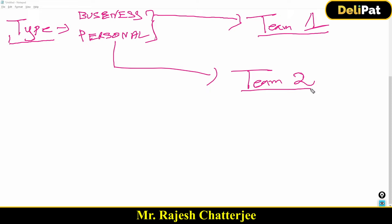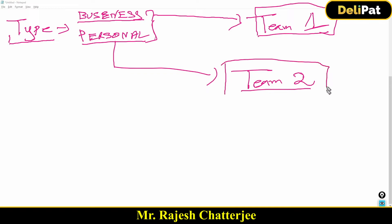There are two teams — Team One and Team Two. Team Two handles personal-level background verifications. If the lead type is Business it will be automatically shared with Team One; if the type is Personal it will be shared with Team Two automatically — nobody does this manually. Now we'll go into the system and see how to implement this.